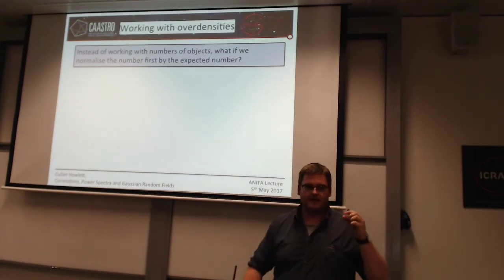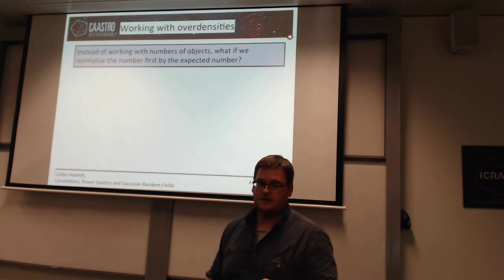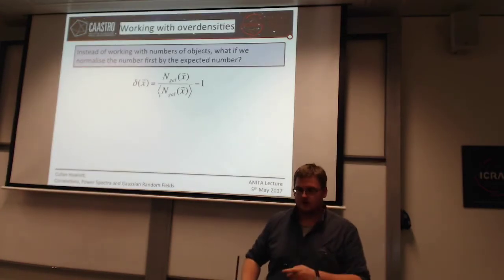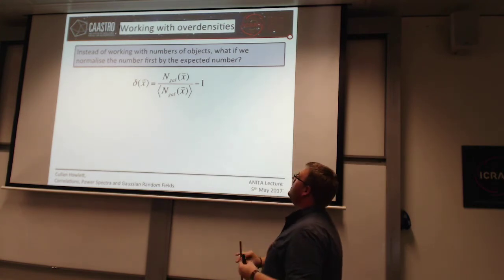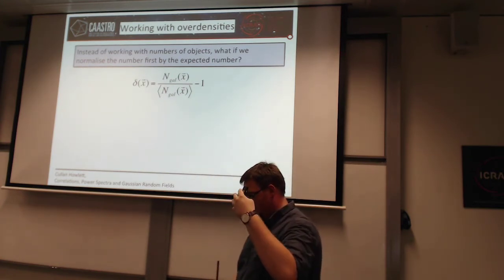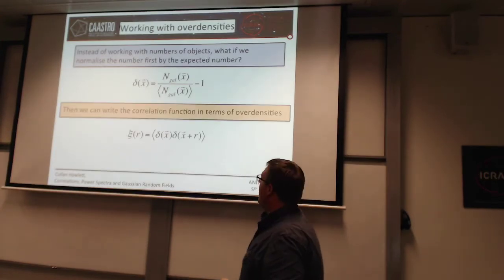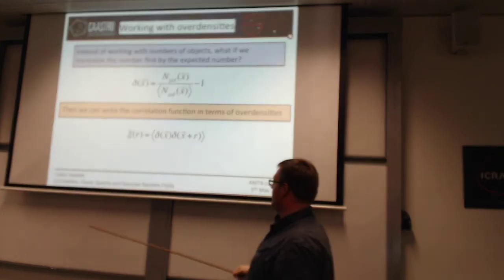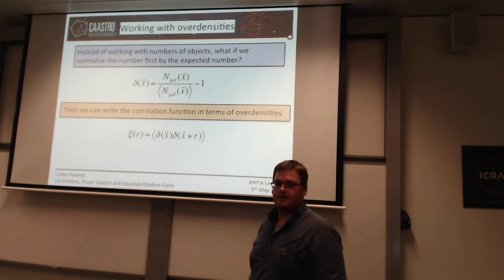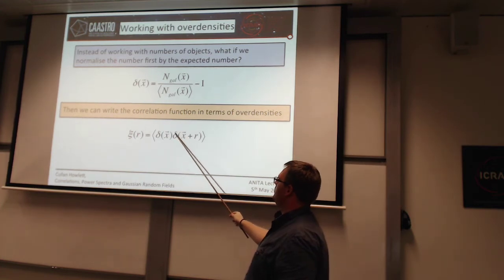What if instead of working with galaxy numbers, you work with a number normalized by the expected number? In cosmology we define something called the over-density, which was also mentioned at the end of the previous lecture. Rather than taking a pure number of galaxies and computing data pairs and random pairs, we normalize all our galaxy counts by the expected number. This is very useful in that you can write your correlation function just in terms of this over-density. And if you go back to the beginning, you'll see that this looks a lot like a covariance — it's the covariance between the normalized field at x and the normalized field at x plus r.